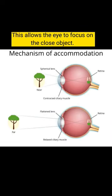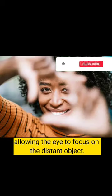When an object is far away, the ciliary muscles relax, causing the lens to become thinner and less curved, allowing the eye to focus on the distant object.